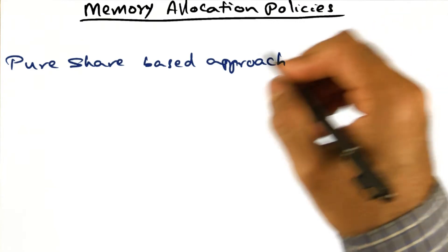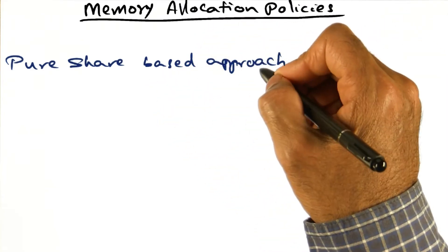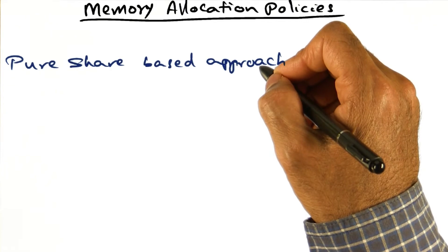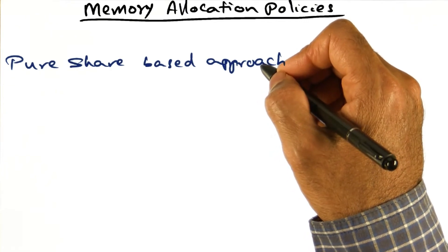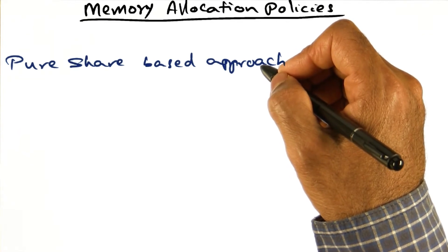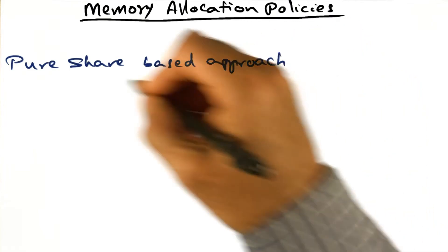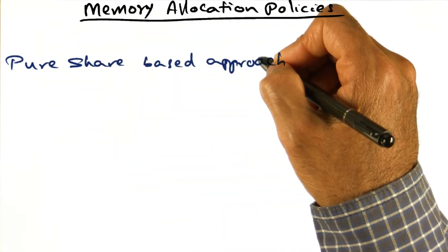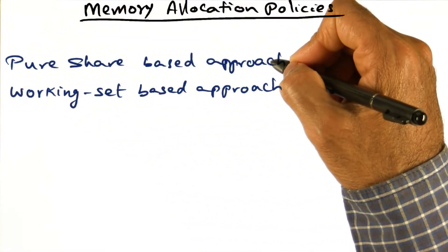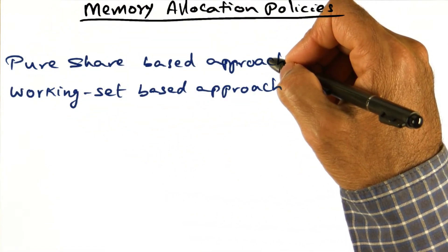One policy can be a pure share-based approach. The idea here is you pay less, you get less. So if you have a service level agreement with the data center, then the data center gives you a certain amount of resources based on the amount of dollars you put on the table. The problem with the share-based approach is, of course, the fact that it could lead to hoarding.